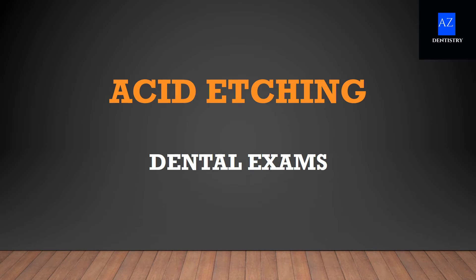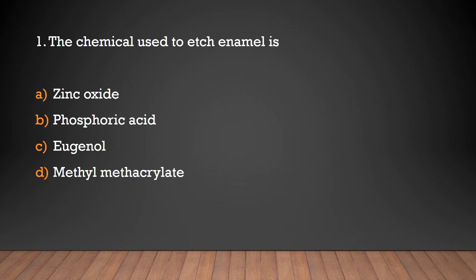Hello friends, welcome to A2Z Industry. This video focuses on important MCQs related to acid etching. The chemical used to etch the enamel is: zinc oxide, phosphoric acid, eugenol, or methyl methacrylate?